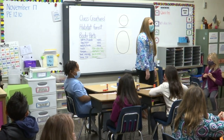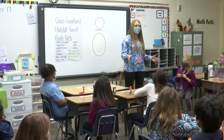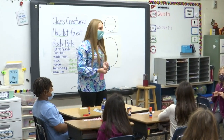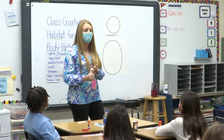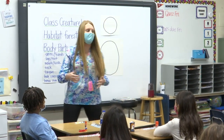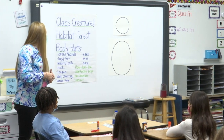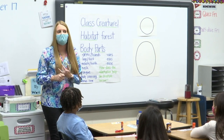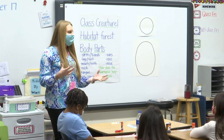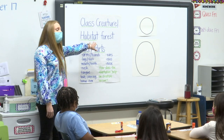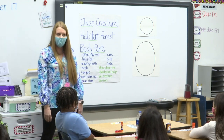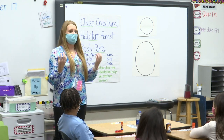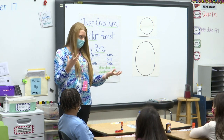Earlier this week we were brainstorming and we learned that we are going to be creating a class creature. For our class creature we're going to be today talking about physical adaptations and later on tomorrow we're going to be talking about behavioral adaptations. We did some brainstorming about our class creature and we wanted to first pick a habitat — a place for the animal to live. We brainstormed lots of different habitats and we voted on the forest. So our forest is the habitat where our creature is going to be living. We also talked about what kind of things we wanted it to eat and what kind of things might eat our creature.